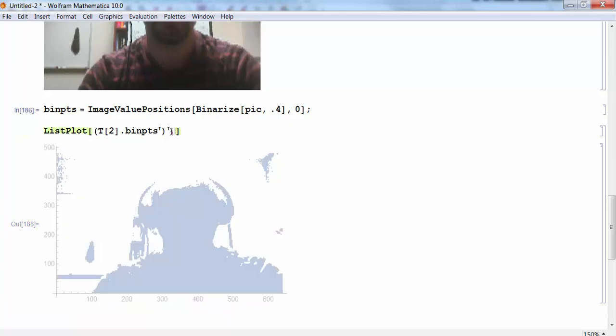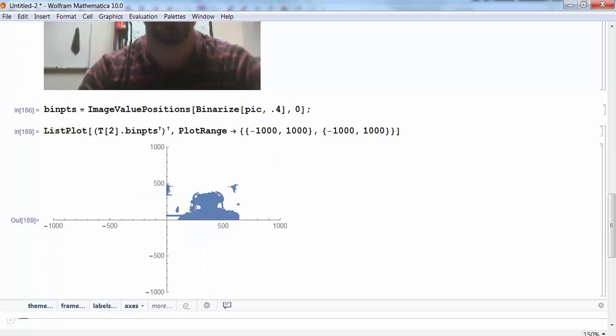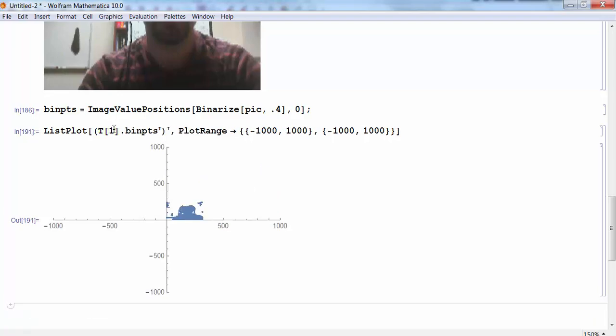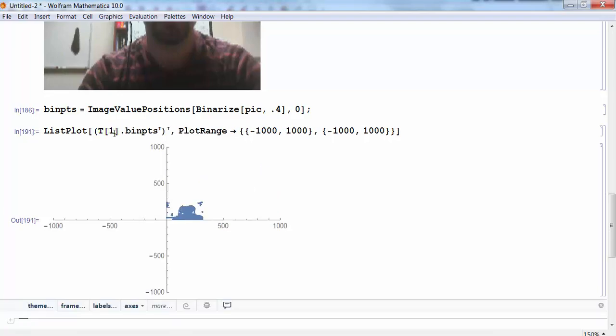So I'm going to add a plot range like I did before. We'll use x values to go from, and we'll just pick a big value here, negative 1,000 to 1,000. And same thing for my y values. All right. Now, once again, what happens is I change this value. I really am stretching or contracting all those points.